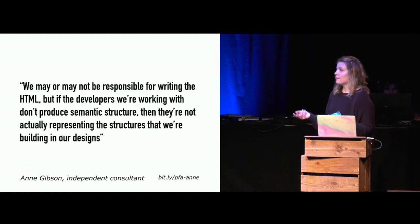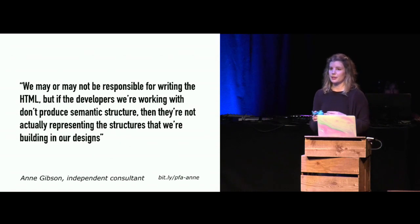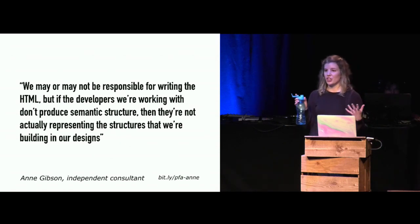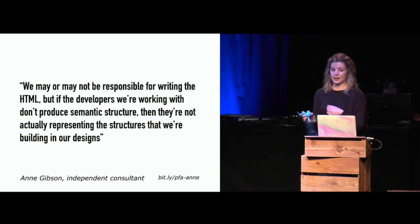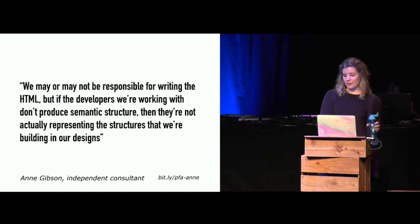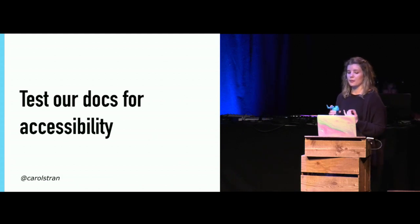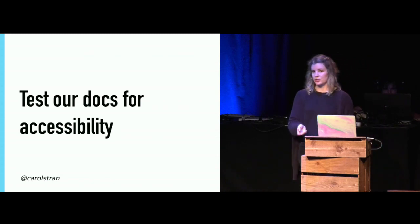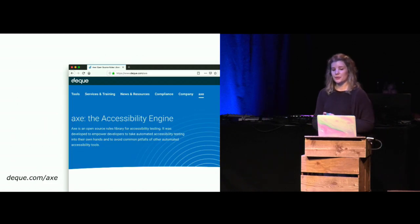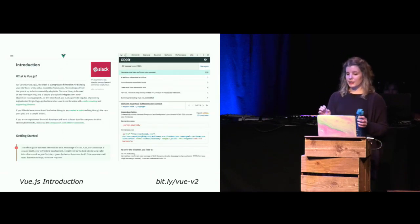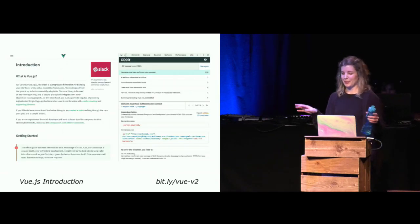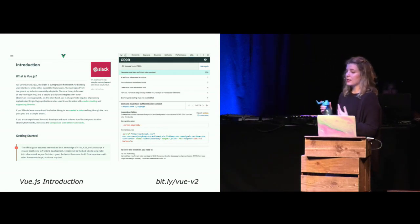We can test our documentation for accessibility the same way that we might for our products. There are many free extensions and validators that help automate accessibility testing and scan for errors on our site. First is Axe, which is an open source rules library for accessibility testing — it was designed to enable developers to automate their accessibility testing. It lives in the dev tools, but it's basically just pressing a button. When you analyze the site, it comes up with issues, the number of occurrences, the element location, and some suggested fixes.